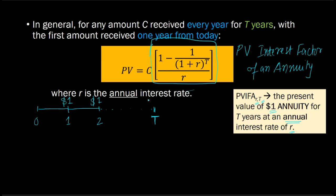You're getting the last dollar here. We're seeing that the present value of this annuity, this $1 annuity that lasts for T years when the interest rate is some number R, that is given by this expression right here.